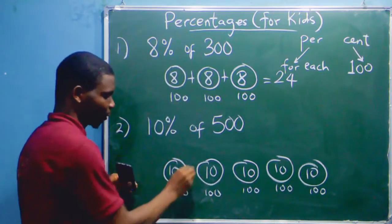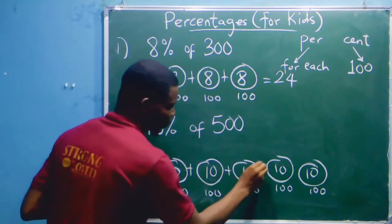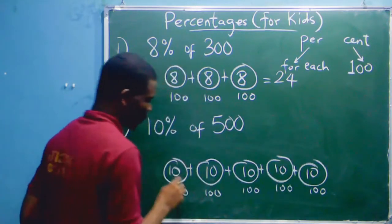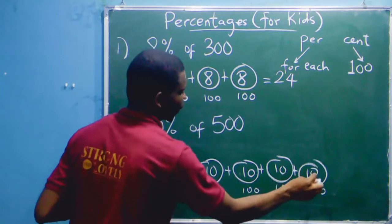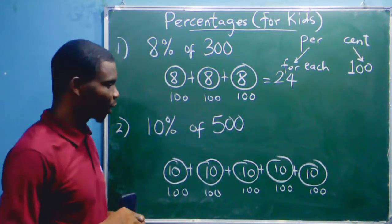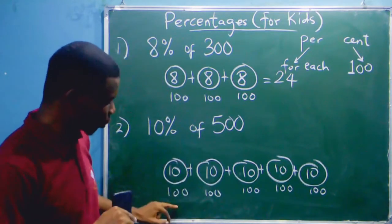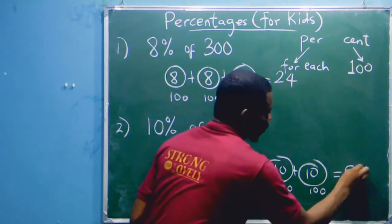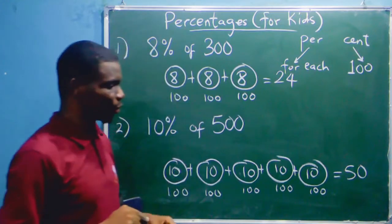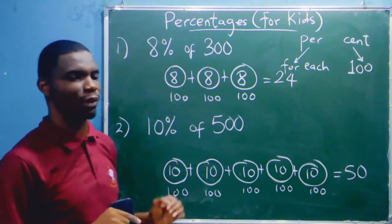What would that be? When we add it up, what do we get? 10 + 10 = 20, + 10 = 30, + 10 = 40, + 10 = 50. So 10% of 500 is 50. I hope you now understand what we mean when we say